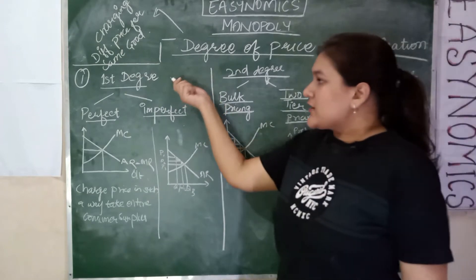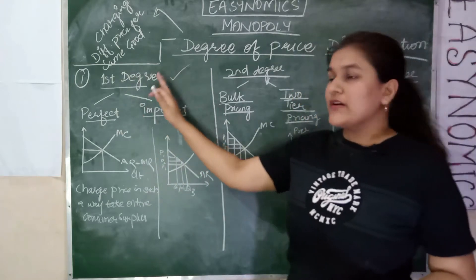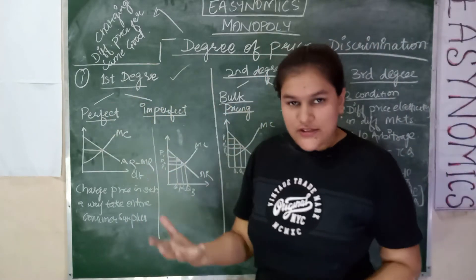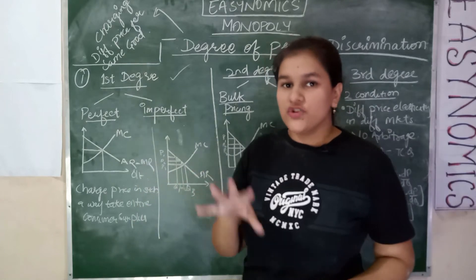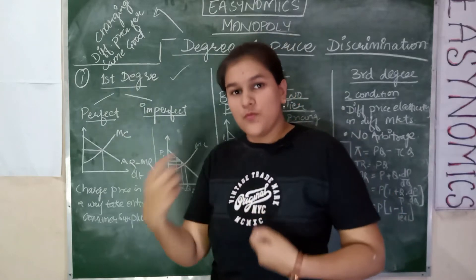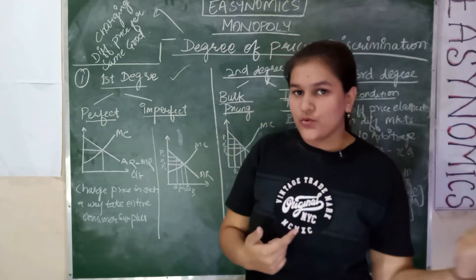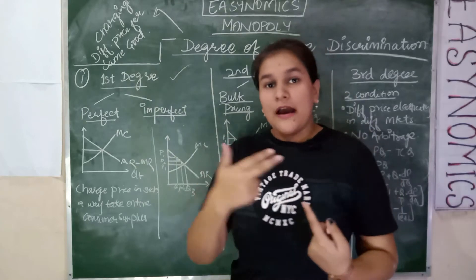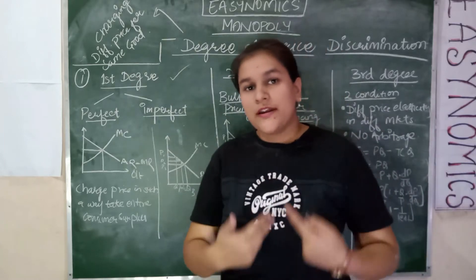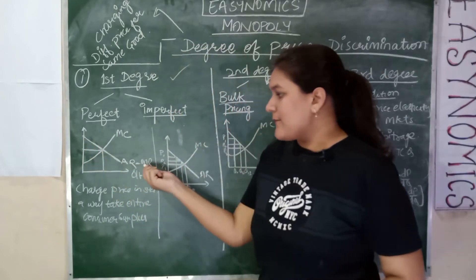In the first degree of price discrimination, we have two types: perfect first-degree price discrimination and imperfect first-degree price discrimination. In perfect price discrimination, we assume that the average revenue curve of the market is known, and the monopolist is able to charge a different price for each different unit of the commodity. For example, when a consumer buys the first unit, I charge one price; for the second unit of the same commodity, I charge a different price; and for the third, yet another price.